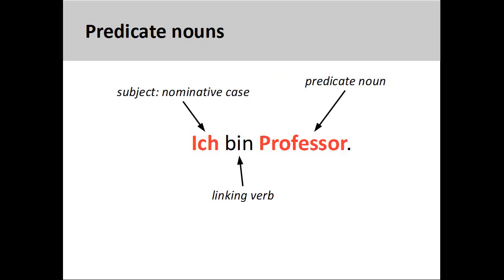Predicate nouns are also in the nominative case. Like predicate adjectives, predicate nouns are simply nouns that appear after a linking verb in a sentence and provide more information about the subject.